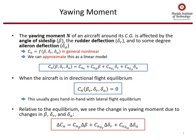The yawing moment N of an aircraft about its CG is affected by the angle of sideslip, the rudder deflection, and to some degree the aileron deflection. We can approximate a model of the yawing coefficient C_n as C_n zero plus C_n beta times beta, plus C_n delta-r times delta-r, plus C_n delta-a times delta-a. When the aircraft is in directional flight equilibrium, the yawing moment coefficient is zero, and this goes hand in hand with lateral flight equilibrium. The change in yawing moment due to changes in beta, delta-r, and delta-a is shown by the equation at the bottom of the page.